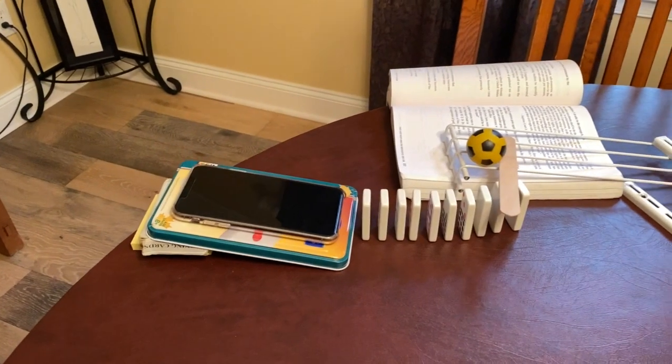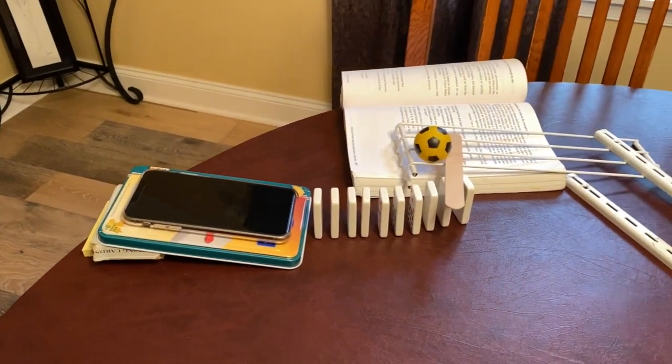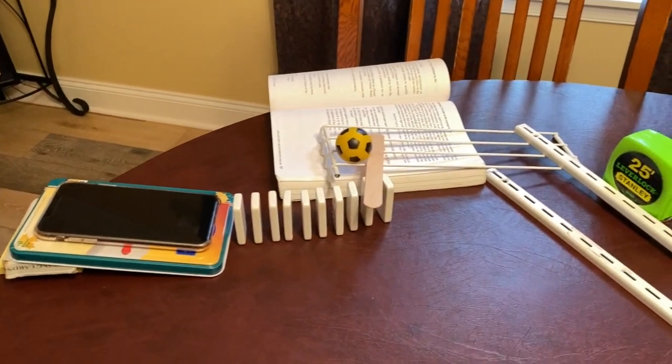Once you call your cell phone, it will vibrate, causing it to travel down an inclined plane and hit a line of dominoes, which will set off a trigger